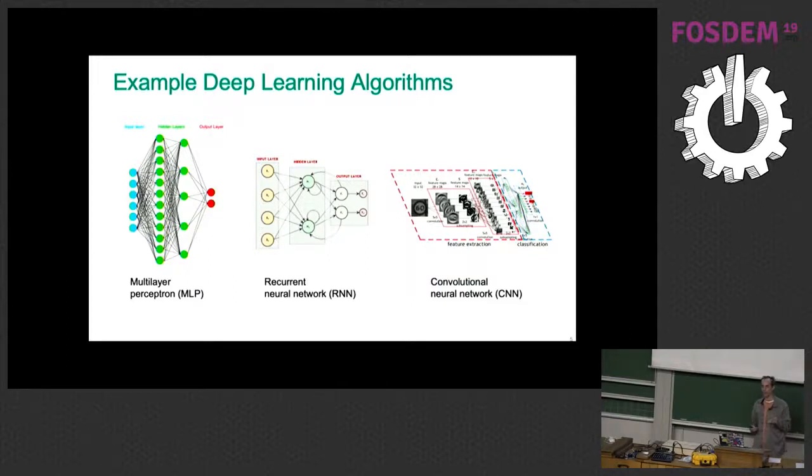But there's other more specialized networks. For example, recurrent neural networks in the middle here. Recurrent neural networks are used on sequential data, like we heard in the machine translation presentation just a few moments ago.